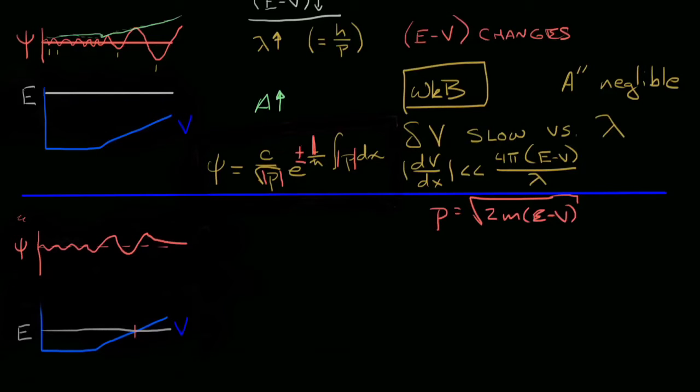So in summary, whether or not e minus v is greater than zero or less than zero, we find that an equation of this form closely represents the actual wave equation.